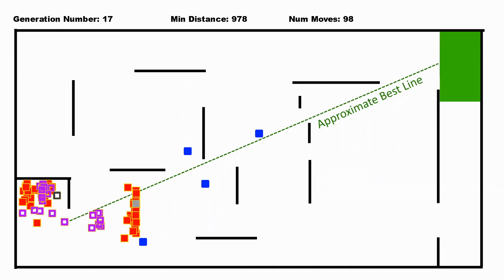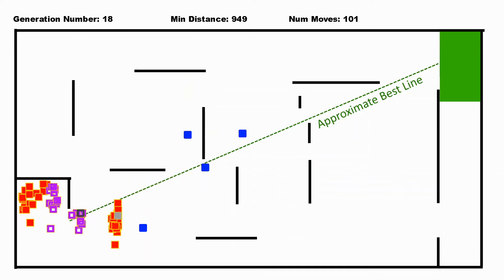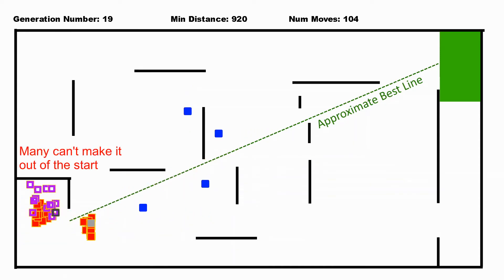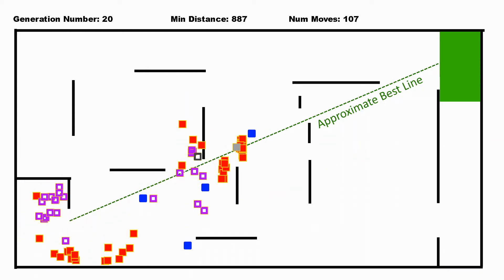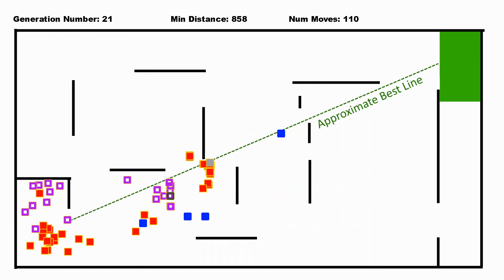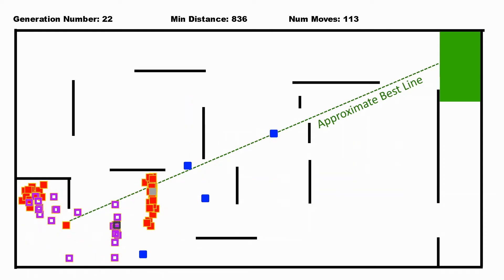So what that means is that every turn we see a bunch of these red squares and purple squares that do worse than their parents. But that's okay as long as there's still at least one or two that are going along this path that's going to get them to the goal.